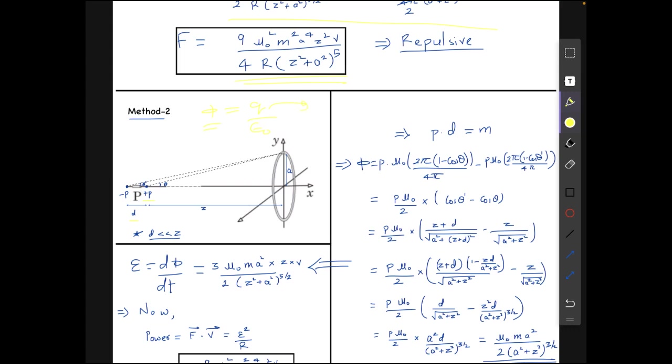We know that 1 by epsilon not can be replaced by mu not. So this will be the flux for a magnetic monopole of strength P. That's what we have used here.